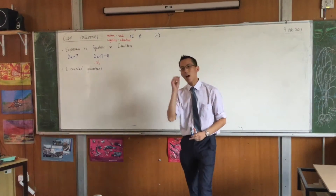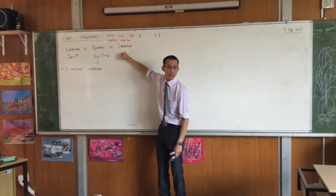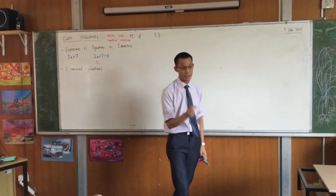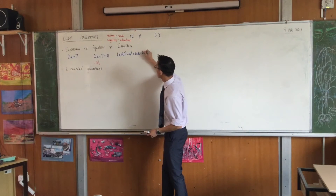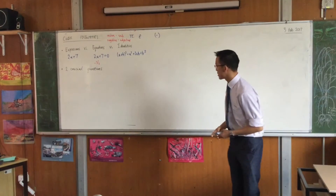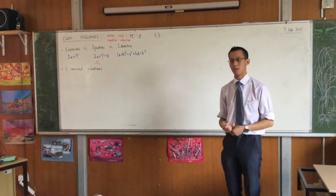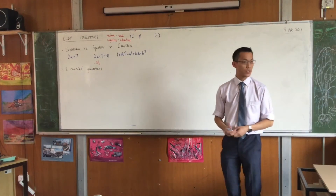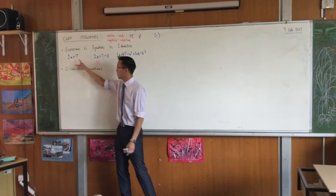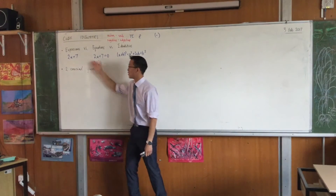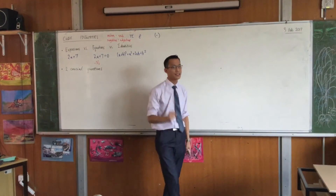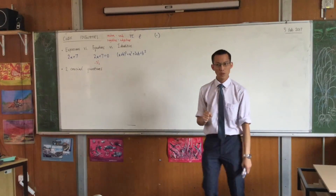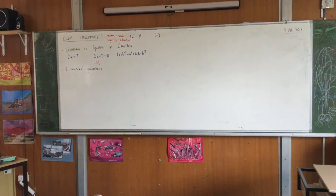I want you to write it down and think about what it is that distinguishes what I'm about to write with one of these equations, because they'll look quite similar. Here is an identity — I'm going to pick one that you already know. Now you may say it looks like it has all the ingredients of an equation. Any suggestions about what the difference is? I'm open to lots of wrong ones, because wrong ones are where you learn something.